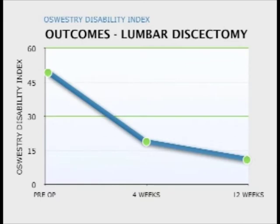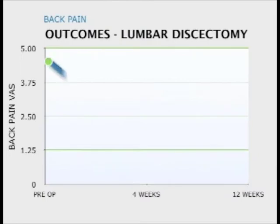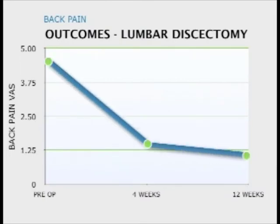Similarly, we have them rate their pain on a visual analog scale — a scale that looks like a ruler starting at 0 and ending at 10 — and we asked them to rank their back pain on that scale. The second graph shows the back visual analog scale. Preoperatively, most people put a mark at about 4 and a half. At the four-week follow-up appointment, they put the mark at just below 1 and a half. And at the three-month appointment, it was at 1. So on a scale of 0 to 10, preoperatively their back pain was 4.5, and postoperatively it was 1 out of 10.